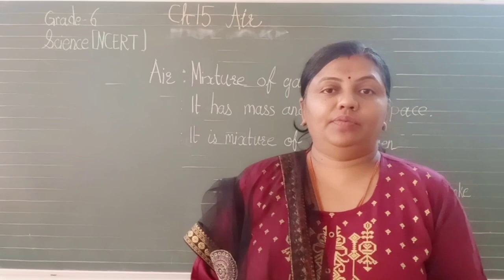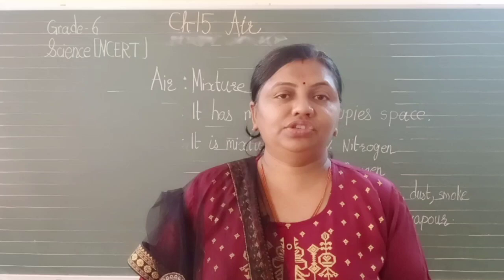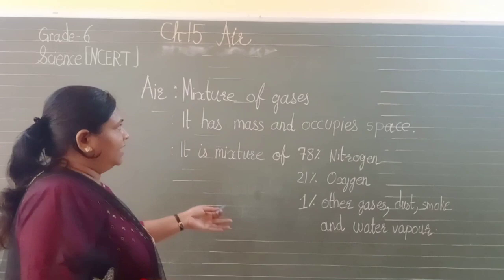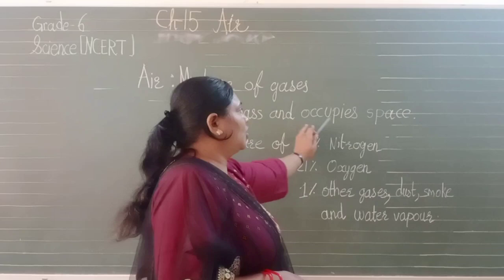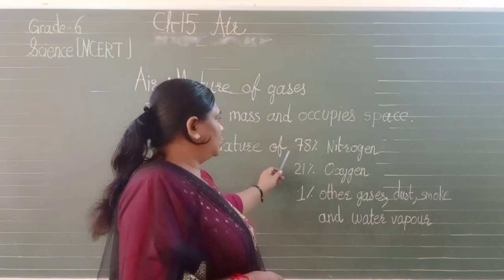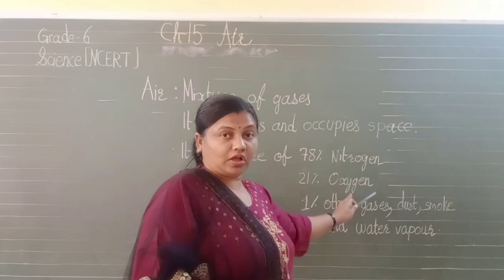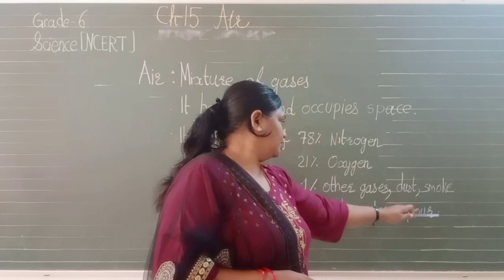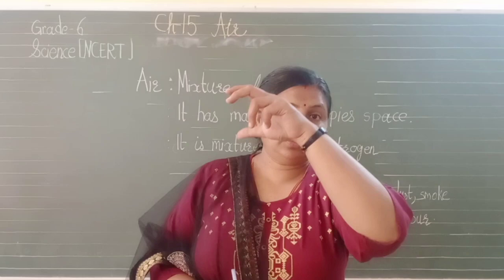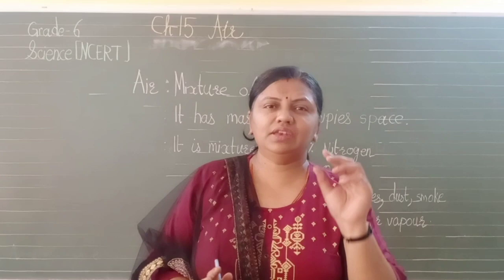Now, what is air made up of? We cannot produce air and there are no factories for air — it is natural. Air is a mixture of many gases. It has mass and occupies space, as you have just seen. Air is a mixture of 78% nitrogen, 21% oxygen, and 1% other gases, dust, smoke, and water vapor. During sunny days, when sunlight enters your home or school, you might have seen many dust particles visible through the beam of light.